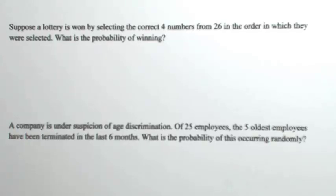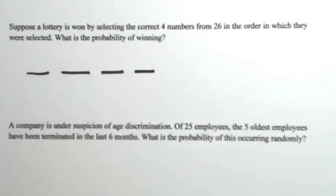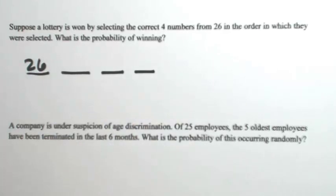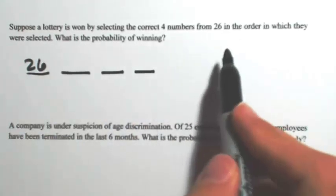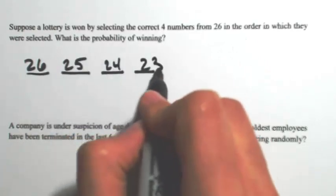Suppose a lottery is won by selecting the correct four numbers from 26 in the order in which they were selected. What is the probability of winning? So we're selecting four numbers, so I'm going to start with four spaces. For the first number, if we have 26 numbers that we can pick from, there's 26 possibilities. After that, now there's 25 and 24 and 23.